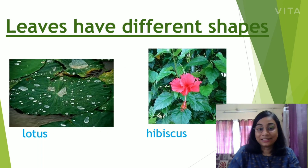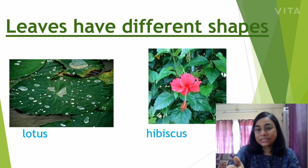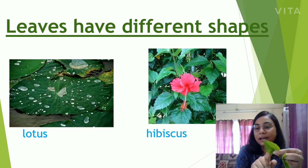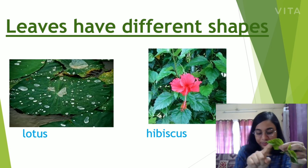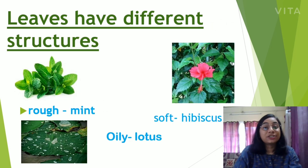Leaves also have different shapes. Some leaves are round in shape, like the lotus leaf, while hibiscus leaves have a different shape. You can see it is quite different from a lotus leaf. Leaves also have different structures.